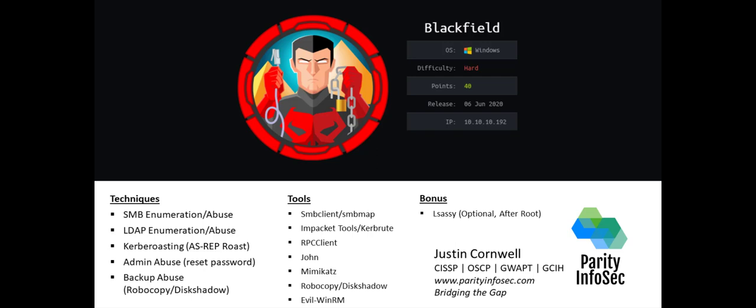We'll go ahead and re-enumerate the box, go after a few things, and it's ultimately going to lead us to RPC Client. As a support administrator, we're going to be able to reset a password. That'll get us to user 2. User 2 is going to be another re-enumeration against SMB — get some information off of one of the share drives, pull it down, do some memory analysis, and then ultimately we're going to use Mimikatz.